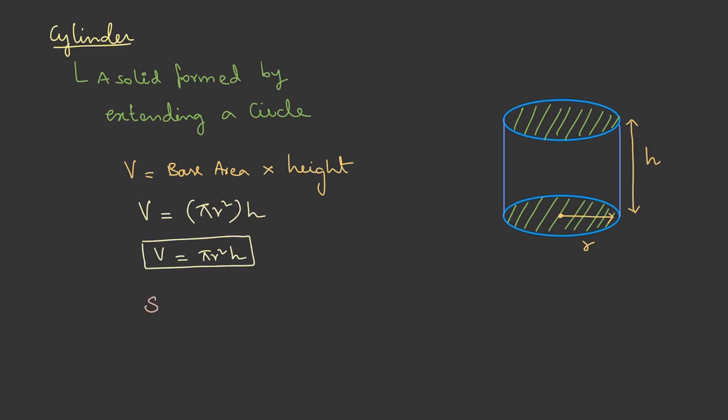Now, coming to the surface area. Surface area we can take it as two circles plus this round wrap. So, two circles area is two times of pi r square.